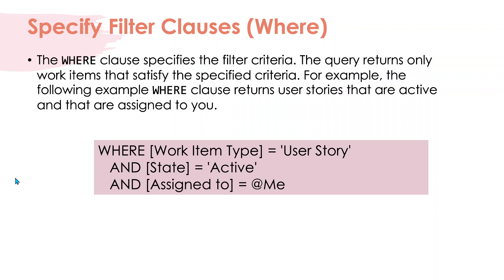Next, the WHERE clause is very similar to SQL. It specifies filter criteria and the query returns only work items that satisfy those criteria. For example, you can write WHERE the work item type is User Story, the state is Active, and it is assigned to yourself using the @Me macro. This is how you use the WHERE condition in WIQL.